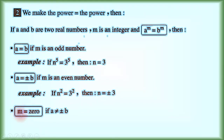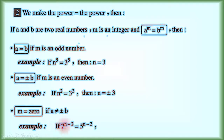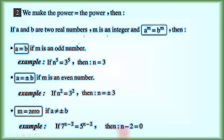Rule 3: m equals zero if a does not equal positive or negative b. Example: if we have 7 power (n minus 2) equal 5 power (n minus 2). Because the powers are the same and the bases are not equal — 7 is not equal to 5 — therefore the power must equal 0. So n minus 2 equals 0, therefore n equals 2.